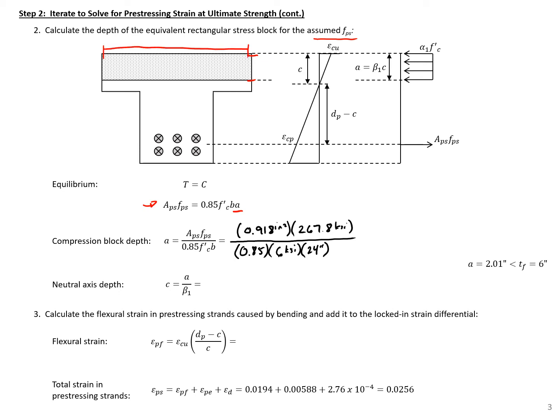the width of our compression block there. And we'll get an A here equal to 2.01 inches. So you can see this is less than our top flange thickness of 6 inches. So we know that our compression block does fall completely in our top flange. So we're okay there.